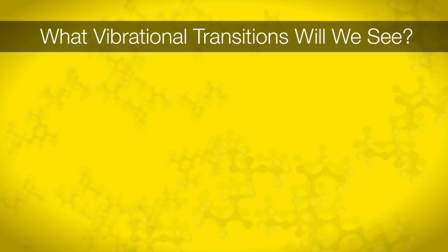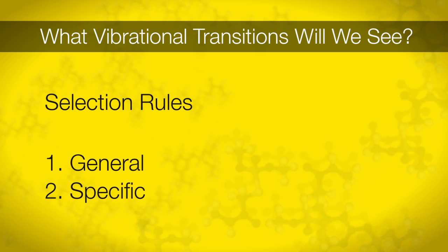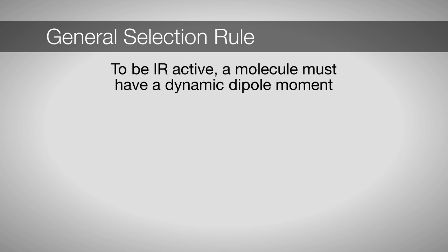Quantum mechanics tells us only certain transitions are possible, or allowed. We call these selection rules. We will commonly hear about two different types of selection rules, general and specific selection rules. A general selection rule tells us about a property that a molecule must have in order to absorb a photon. The general selection rule for IR spectroscopy is that a vibration must have a dynamic dipole moment. This means that the dipole of the molecule must change through the process of the vibration.